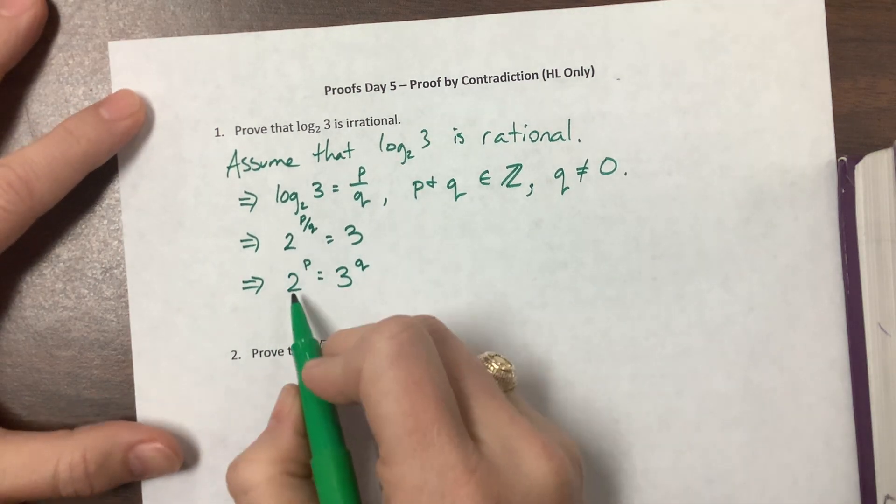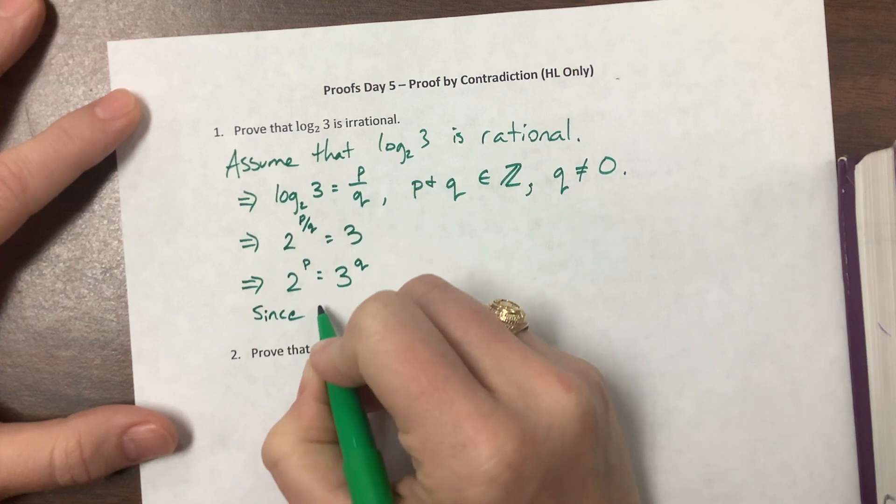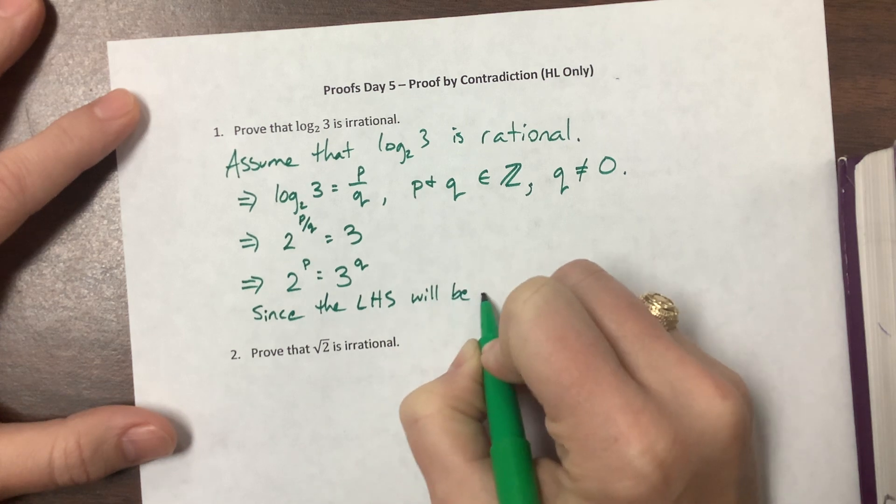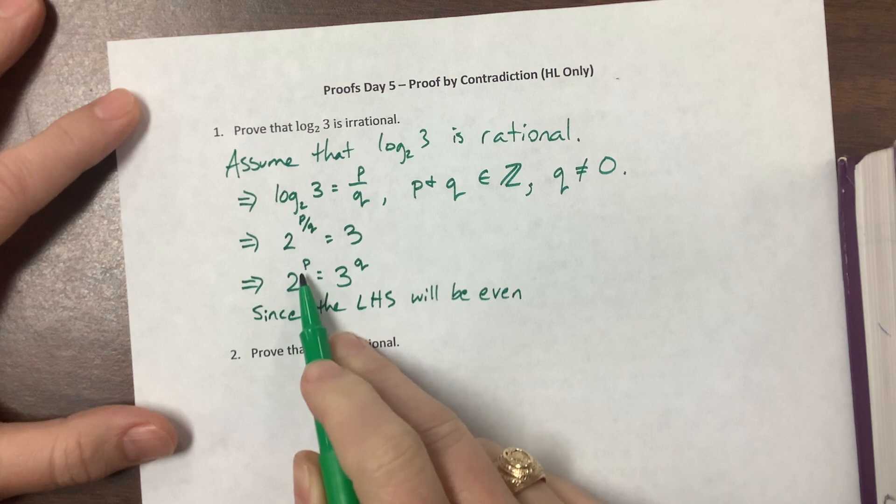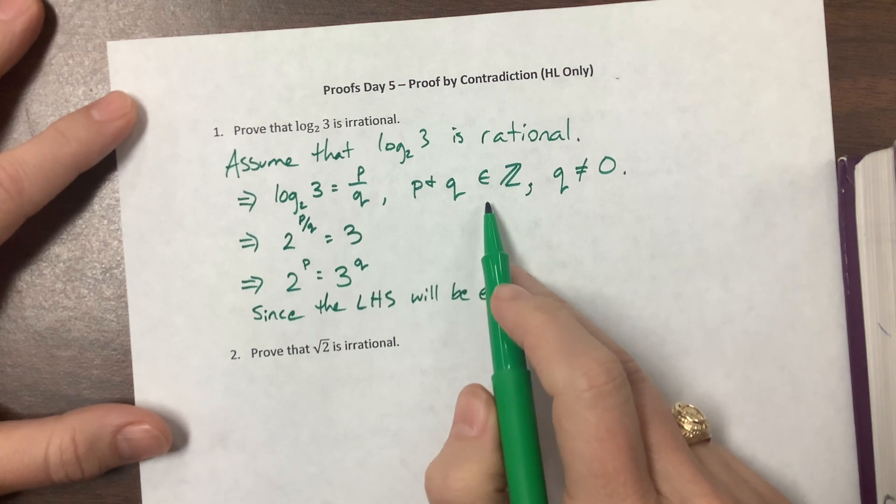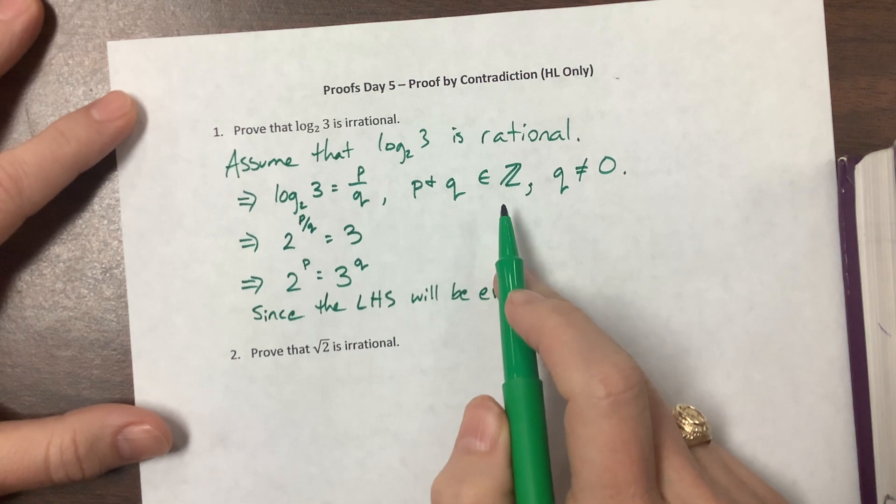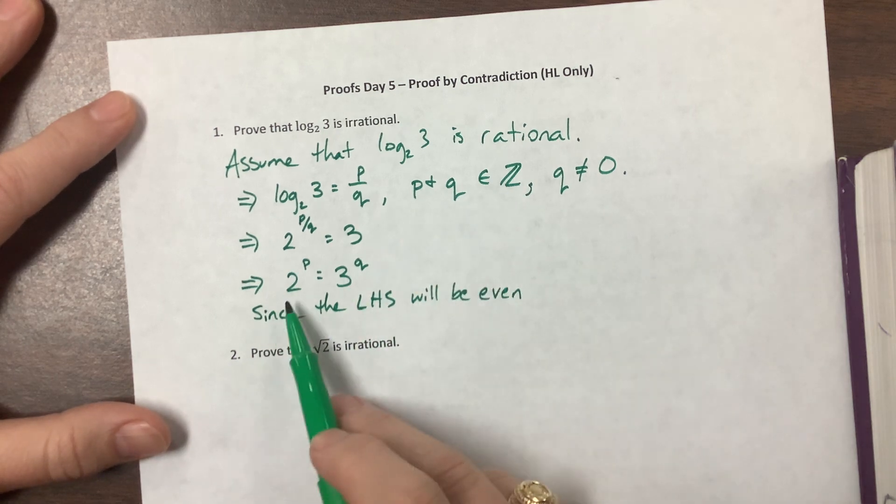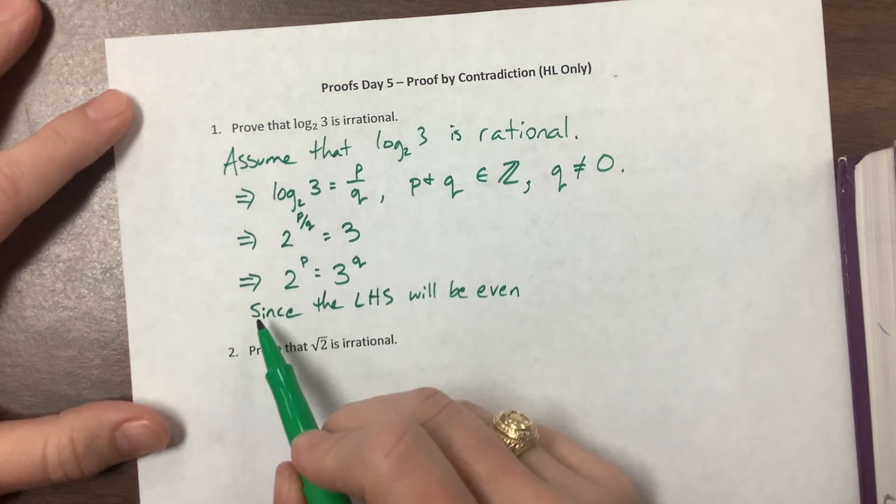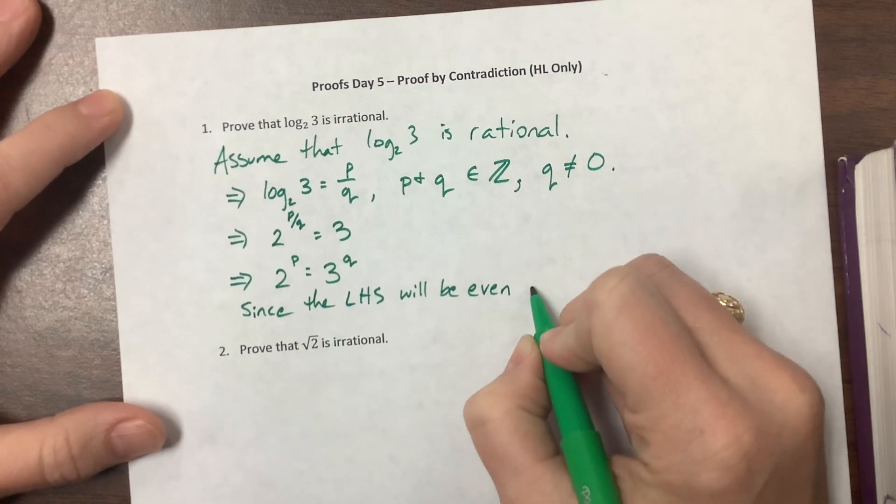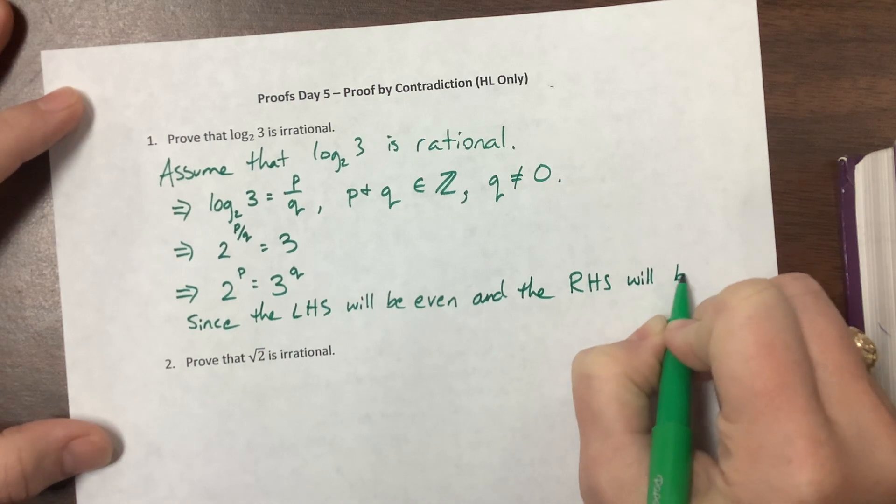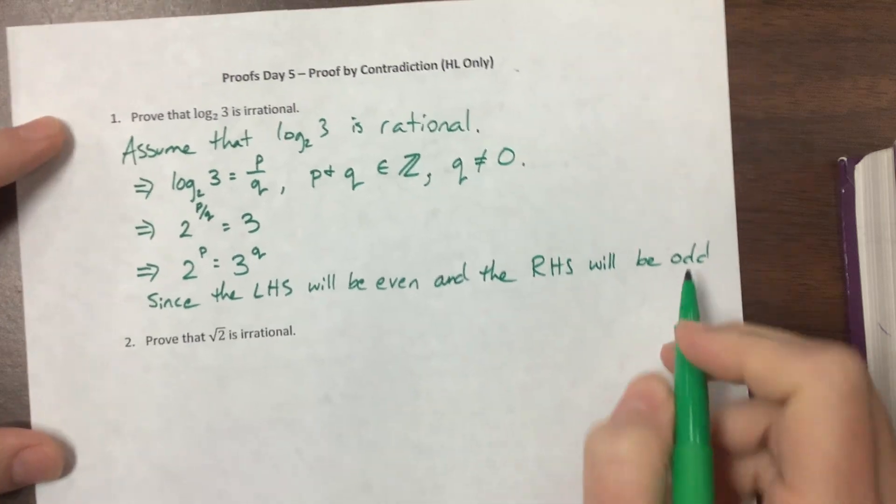So what happens is we can say since the left-hand side will always be even, because no matter what number, well these are integers, positive or negative—any positive integer we plug in is going to give us an even number. Since the left-hand side will be even and the right-hand side will be odd, we have a contradiction.